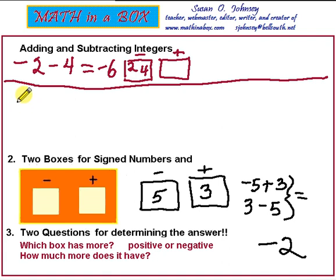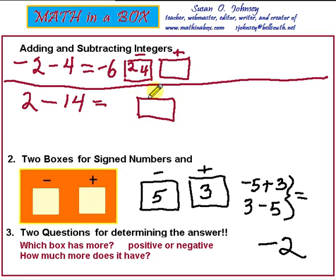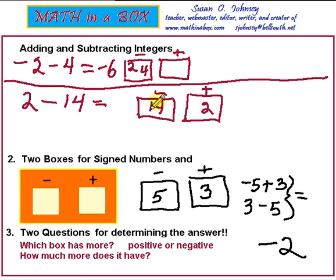Let's take a positive 2 and a negative 14. Draw your boxes and place your numbers in the correct box. The 2 is positive — it does not have a sign on its left, so it goes in the positive box. The 14 has a negative on its left side, so the 14 is negative and goes in the negative box. Which box has more? The negative box has more. How much more? It has 12 more than the positive box, so our answer is negative 12.